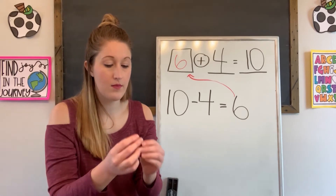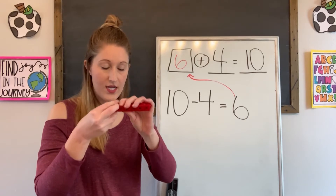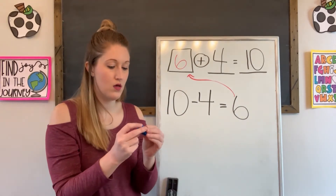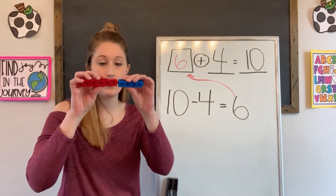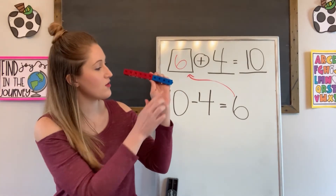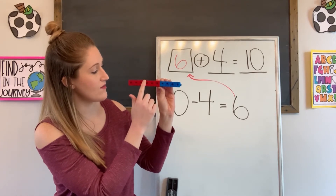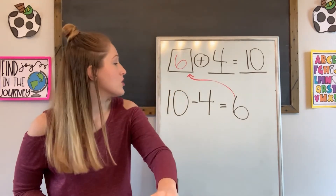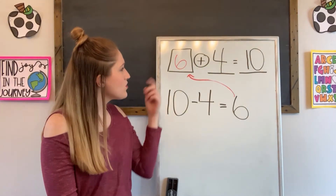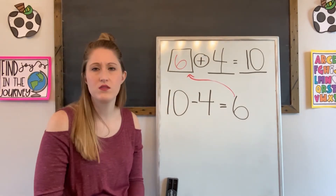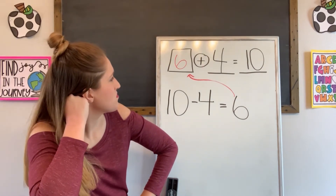I'm gonna make a group of six and a group of four, and put those together. Let's count to see how many we have all together: one, two, three, four, five, six, seven, eight, nine, ten. So six plus four does equal 10. Now, if you look at this addition sentence and this subtraction sentence, do you notice anything about the numbers?